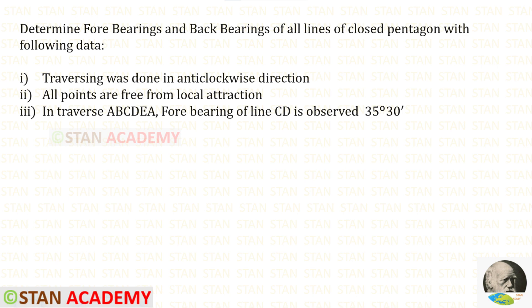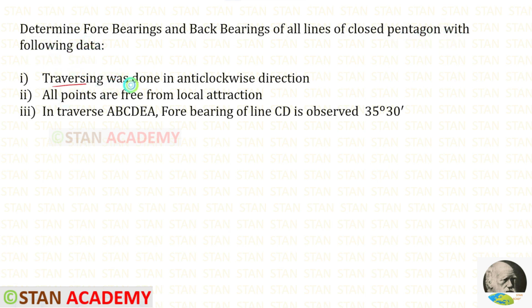Hello everyone. Today we are going to do a problem based on compass surveying. Let us read the question. Determine the forebearings and back bearings of all lines of a closed pentagon with the following data. Traversing was done in anti-clockwise direction. All points are free from local attraction. In traverse ABCDEA, the forebearing of line CD is observed as 35 degrees 30 minutes.